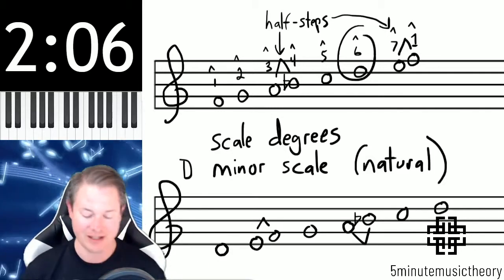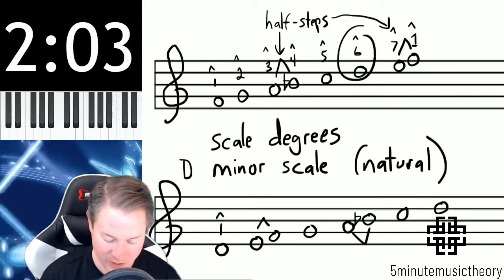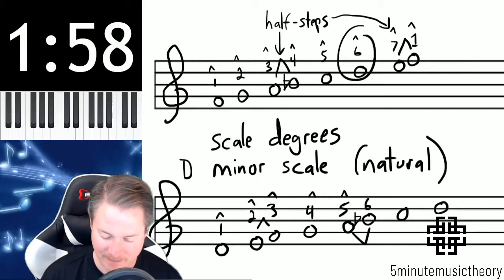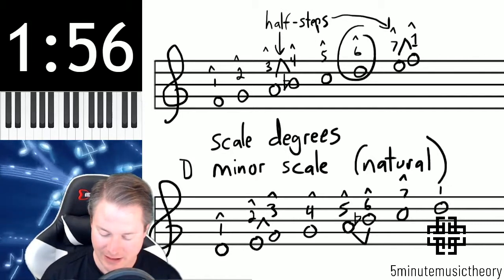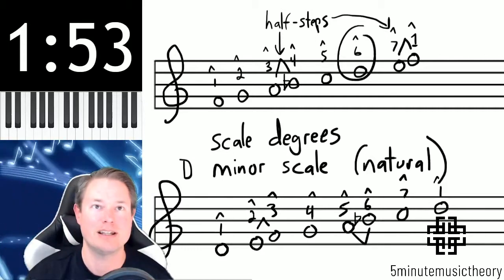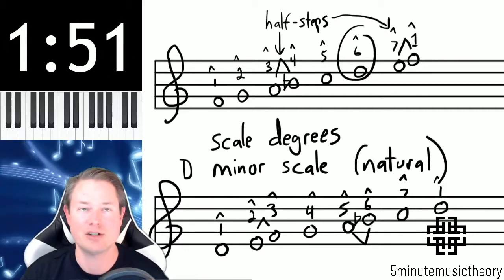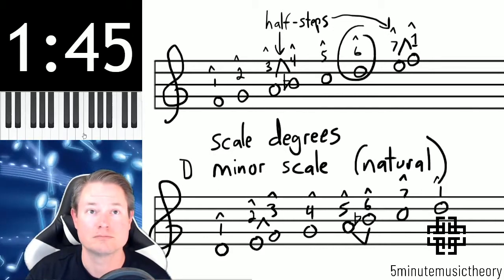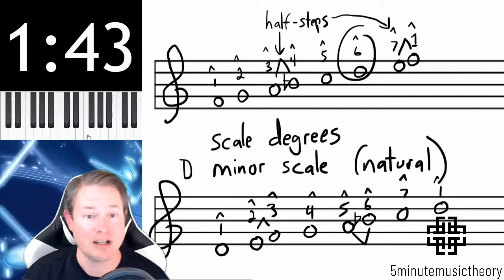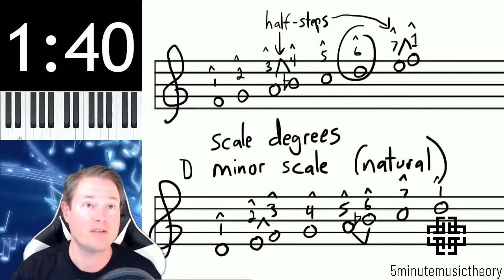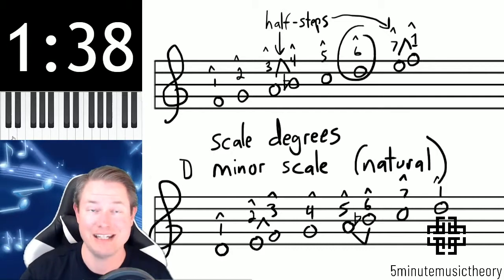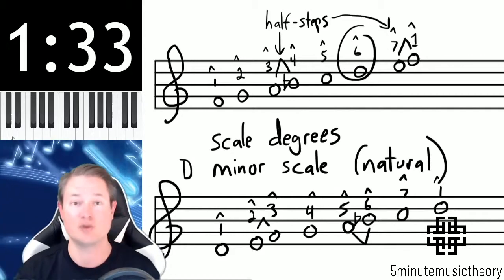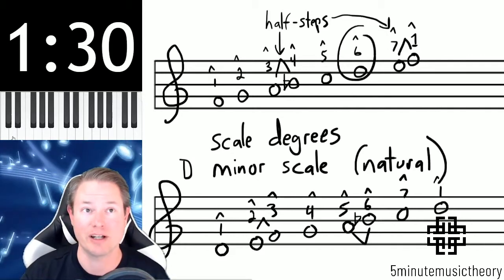Notice the half steps in minor are in a different place than they were in major. Here it's between two and three, and then between five and six, then seven, and then one. So let's hear the difference between these. First, the F major scale — I'll start with an F3. That's the F major scale, all naturals except for that B-flat. Now if I start the scale on a D instead, but still play the same collection of pitches — all naturals and a B-flat — we get a D minor scale, D natural minor specifically.